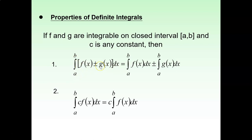For the first property: if you have the integration of f(x) plus or minus g(x) dx from a to b — two different functions — you're going to split them up. So you will have integration of f(x) dx plus or minus integration of g(x) dx, both from a to b. You can write it down in this form.